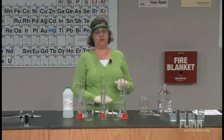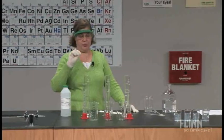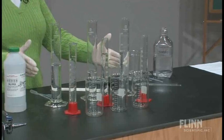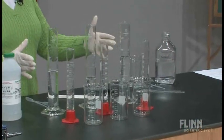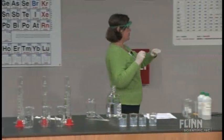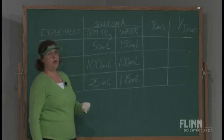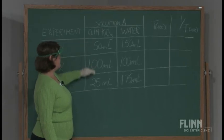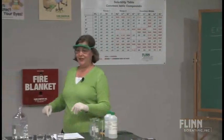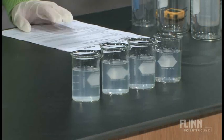The demonstration utilizes three different concentrations of potassium iodate. The concentrations of sodium bisulfite and starch will always be the same. I've pre-measured the potassium iodate and distilled water so that the total volume of solution A is always 200 mL. Solution A is 0.1 M KIO3 with water. We mix solution A with solution B, which has sodium bisulfite, starch, and water — pre-measured and constant throughout.